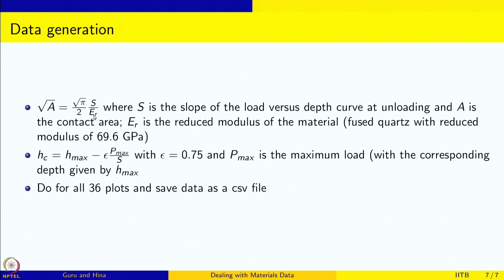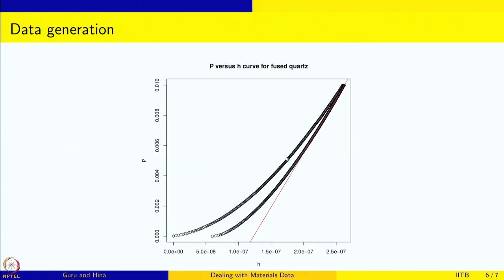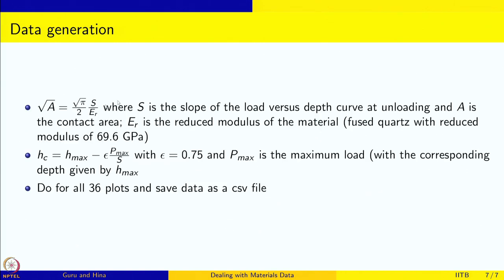Root(A) = (√π / 2) · (S / Er), so (π/4) · S² / Er² gives us A, since we know Er and can measure the slope S from the curve. This is basically the slope of the red line shown. The contact depth Hc is given by Hc = Hmax − ε · Pmax / S, where ε = 0.75, Pmax is the maximum load, and Hmax is the corresponding depth. We know Hmax, Pmax, and S — all of these come from the data itself.